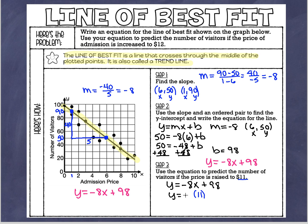Notice I always put the substituted number in parentheses because I want to remember I'm multiplying. So y equals negative 8 times 11, which is negative 88, plus 98. Adding negative 88 and positive 98 gives me positive 10. So our prediction is that if the price is raised to 11 dollars, there would be about 10 visitors.